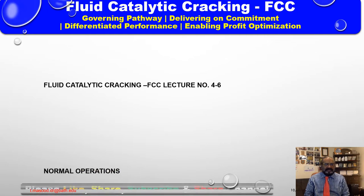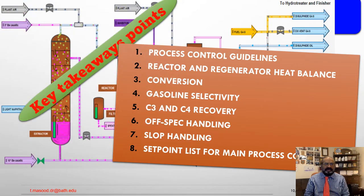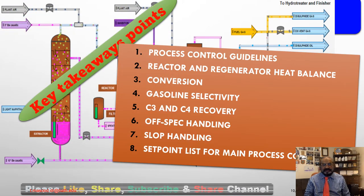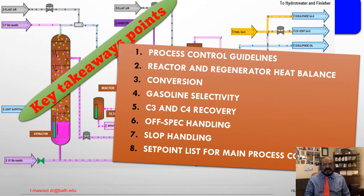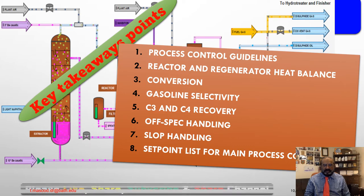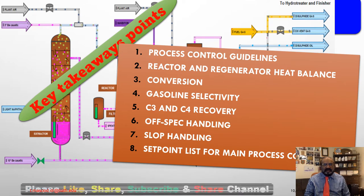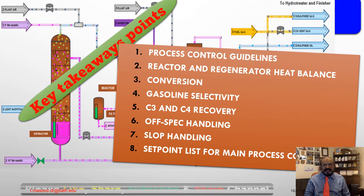Fluidized Catalytic Cracking, Lecture Number Six: Normal Operation. Key takeaway points from Lecture 6 — we have already discussed process control guidelines and reactor and regenerator heat balance. Today we are going to discuss convergent gasoline selectivity, C3 and C4 recovery, off-spec handling, slope handling, and the set point list for main process control parameters.